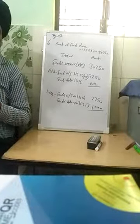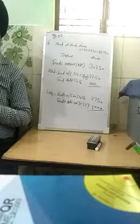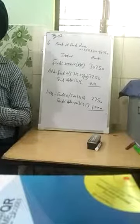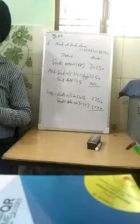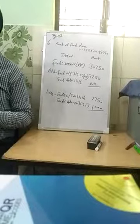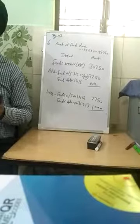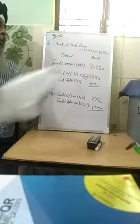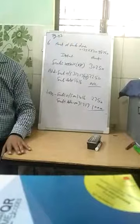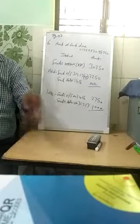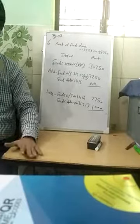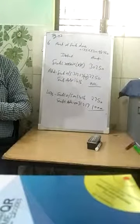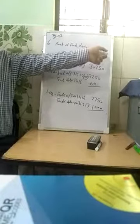Read the question carefully. We discussed at question number 5 that we can use either accounting method or statement method. If question demands it, use the accounting method; otherwise the statement method is fine. When members and per-member subscription are given, first calculate the total amount of subscription due. With 230 members and Rs. 125 per member, total subscription due = Rs. 28,750.